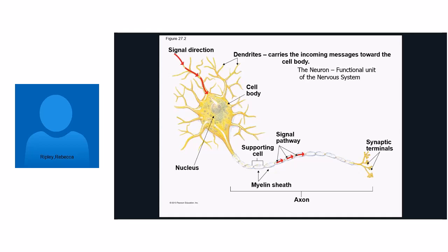A neuron is the functional unit of our nervous system. In the past we've talked about functional units — like alveoli being the functional unit of our respiratory system, and a nephron being the functional unit of our urinary system. Here in the nervous system, our functional unit is the neuron. They can look different, but this diagram shows kind of a basic example of how many of them may look.